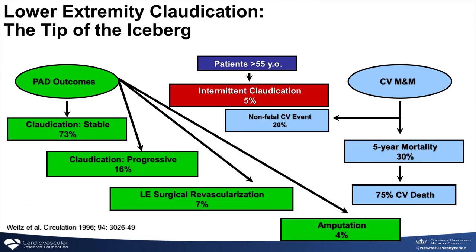Once we've made the diagnosis, the good news is that if patients are treated properly, the average patient will stay pretty stable over the ensuing five years. Only about 10% will go on to needing surgery or amputation. The problem is about a third will develop some morbid or mortal cardiovascular event, and 75% will go on to dying from a cardiovascular cause. Any patient with PAD probably deserves a visit to the cardiologist to ensure appropriate risk factor modification.